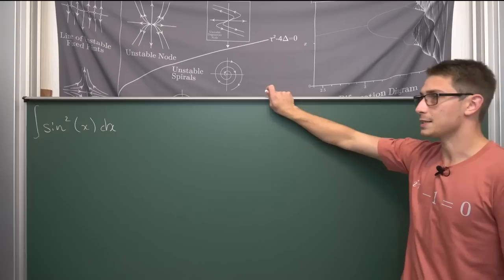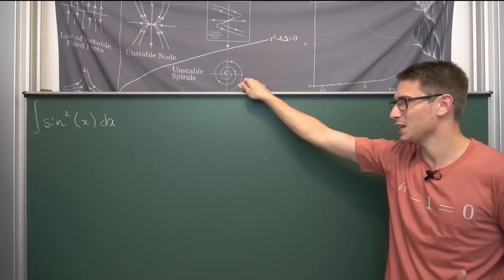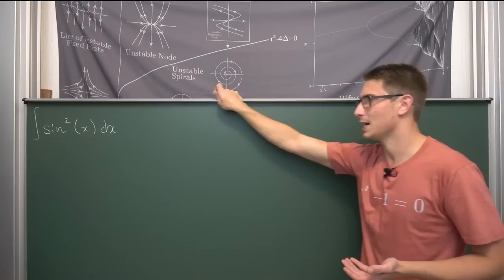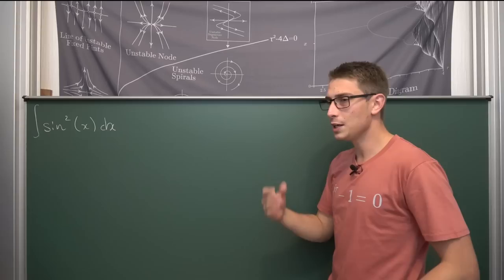So using integration by parts is actually, in my opinion, way more intuitive than using the double-angle formulas or the like, or system of equations. Using double-angle formulas and trig identities here is just unintuitive, in my opinion.